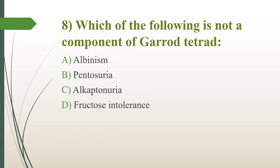Eighth question: Which of the following is NOT a component of Garrod's tetrad? Option A, albinism; option B, pentosuria; option C, alkaptonuria; option D, fructose intolerance. The answer is option D, fructose intolerance. Garrod's tetrad is named for British physician Archibald Garrod, who described inborn errors of metabolism. Garrod's tetrad comprises four inherited metabolic disorders: albinism, essential pentosuria, alkaptonuria, and cystinuria.